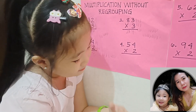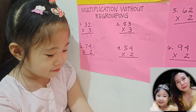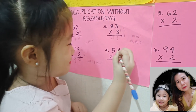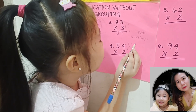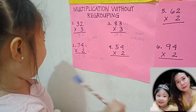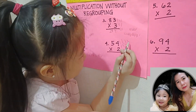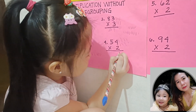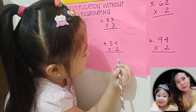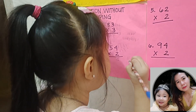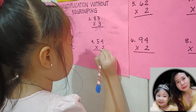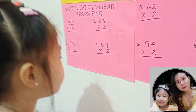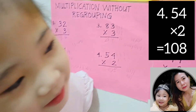Number 4. 4 times 2. I went 4: 1, 2, 3, 5. 1, 2, 3, 4, 5, 6, 7, 8. 1, 2, 3, 4, 5, 1, 2, 3, 4, 5, 1, 2, 3, 4, 5, 1, 2, 3, 4, 5, 6, 7, 8, 9, 10. Okay, number 4 is 54 times 2 equals 108.